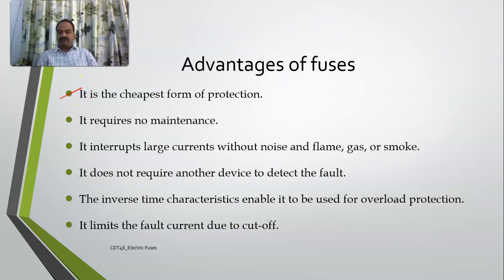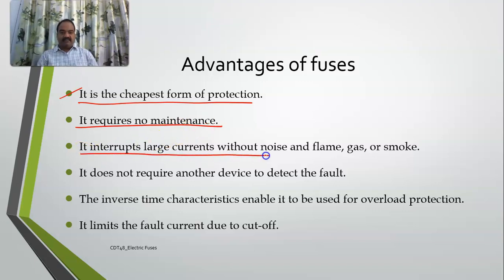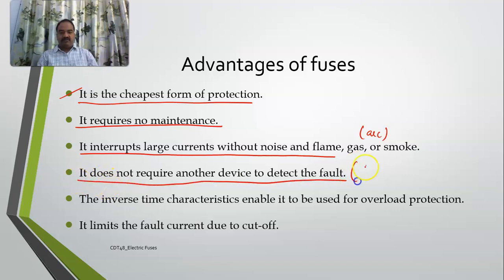The advantages of a fuse: it is the cheapest form of protection available. It requires no maintenance — it just blows off when there is a high current and you replace it. It interrupts large currents without any noise, flame, gas, or smoke, though an arc may appear sometimes. It does not require any additional device to detect faults — unlike protection schemes that use relays, no auxiliary relay is needed.